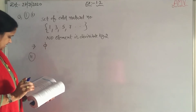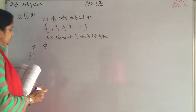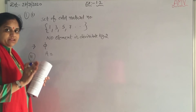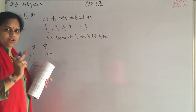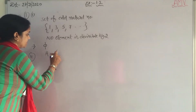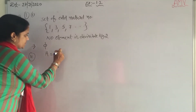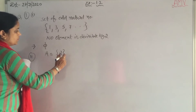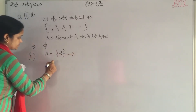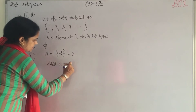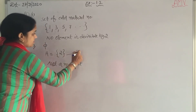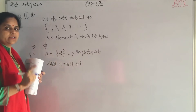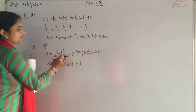Next is the set of even prime numbers. Let it be set A. A prime number has only two divisors: one and itself. The only number that is both prime and even is 2. So set A has one element, which is 2. So it is not a null set — it is known as a singleton set. A set which has only a single element is known as a singleton set.